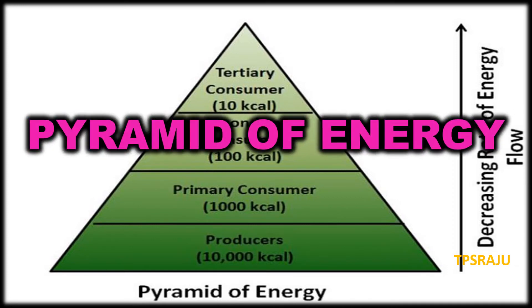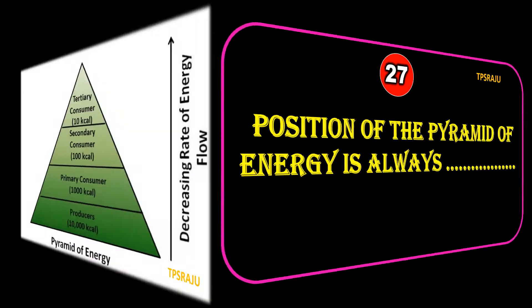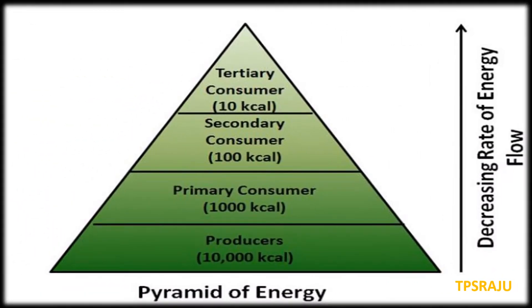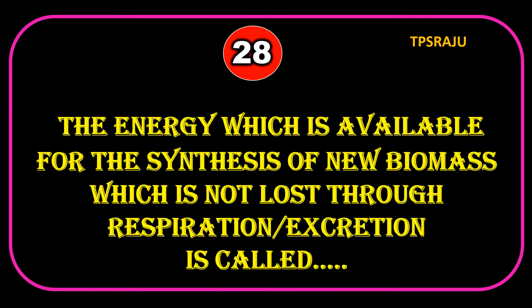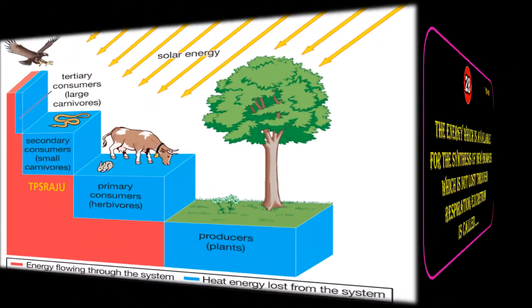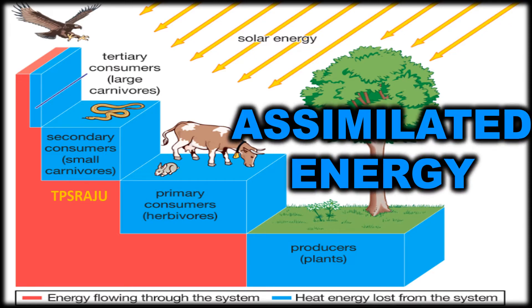The pyramid of energy is always upright. The energy which is available for the synthesis of new biomass, which is not lost through respiration or excretion, is called assimilated energy.